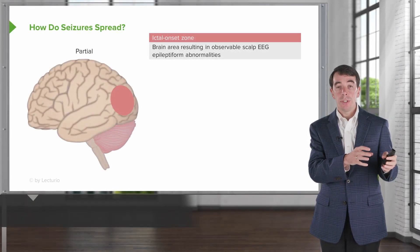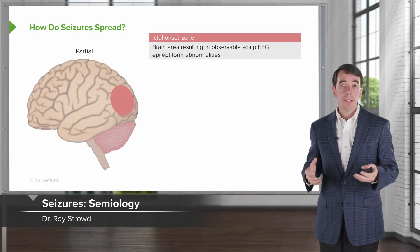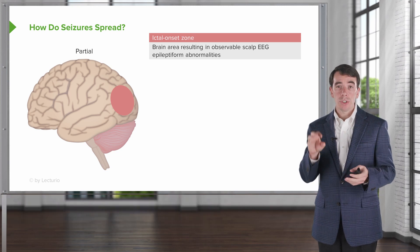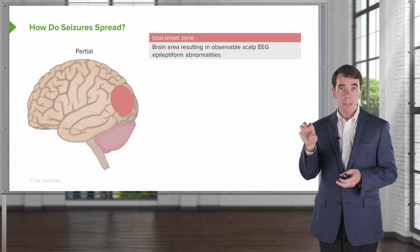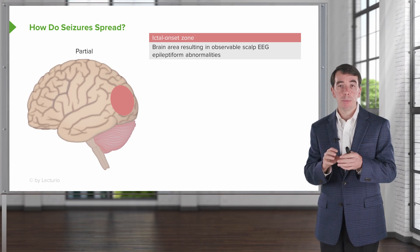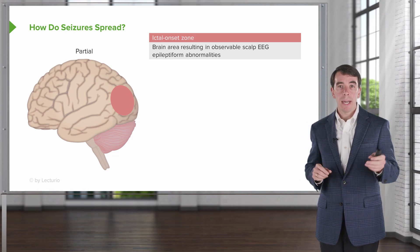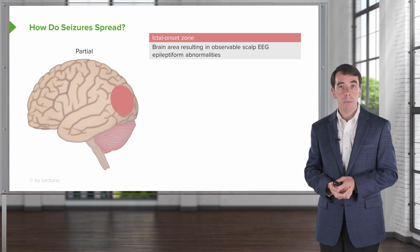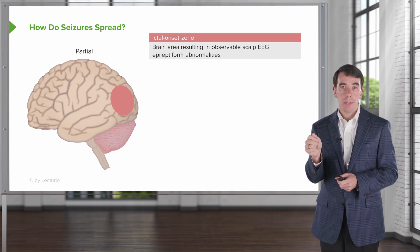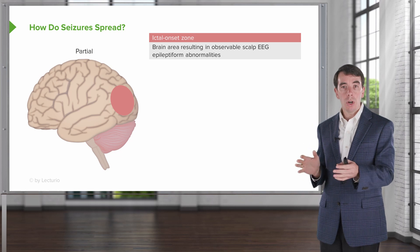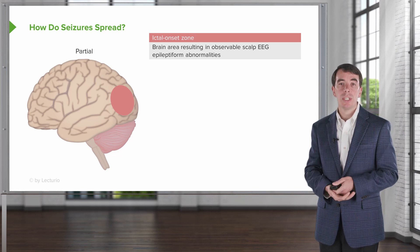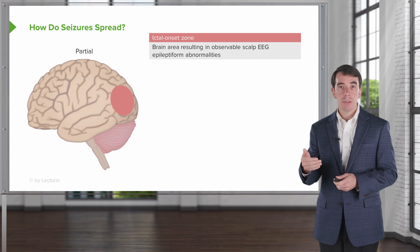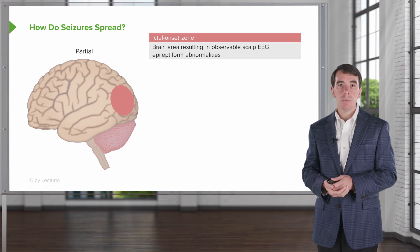So if that's how seizures develop, how do seizures spread throughout the brain? Typically, seizures start in the gray matter, in the cell bodies of the gray matter, and spread along typical white matter tracks. The spread of the seizure is dependent upon where that seizure starts. There are some typical zones that we tend to see related to seizure spread that help us evaluate patients clinically and see the seizures with the EEG.